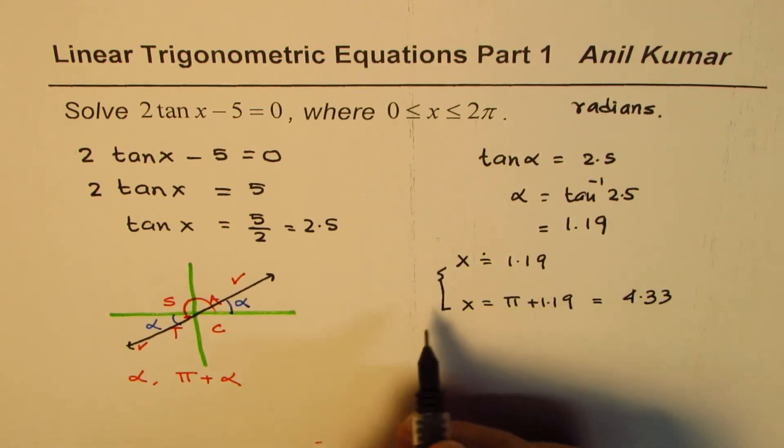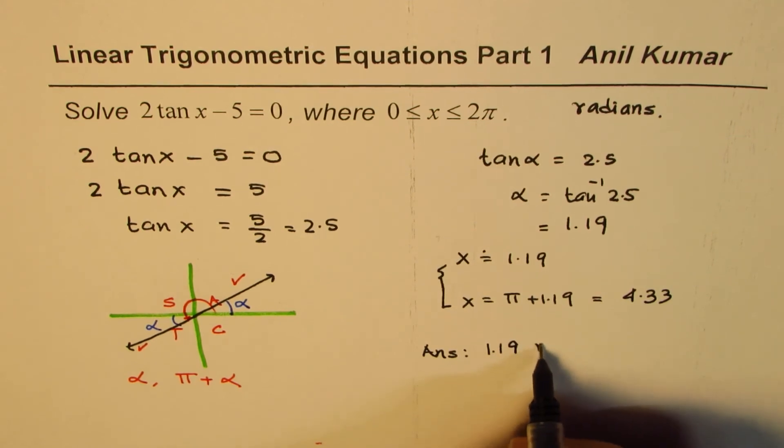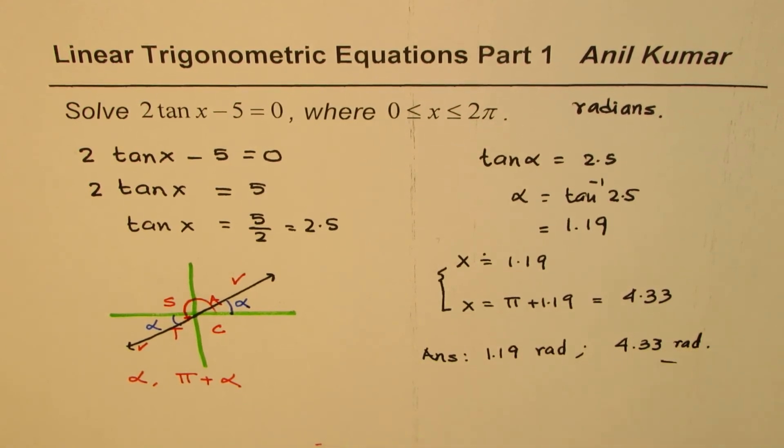So there are two answers, and these answers are, let me write them clearly: 1.19 radians and 4.33 radians. So these are the two solutions for the given equation.